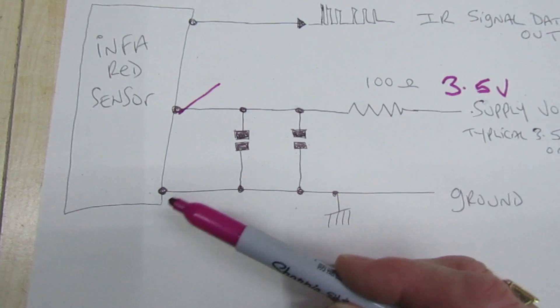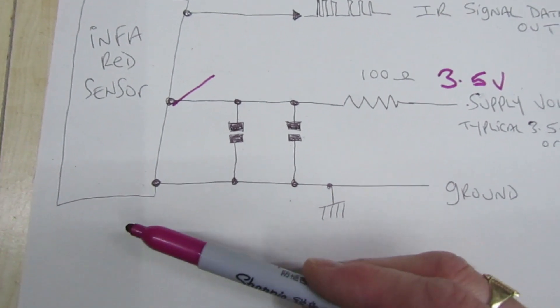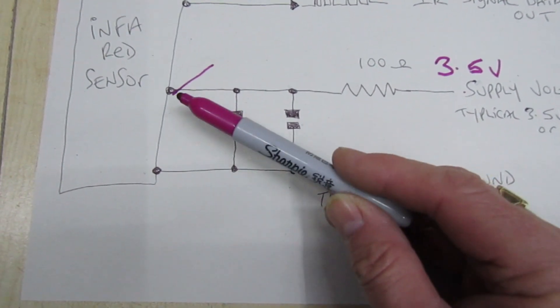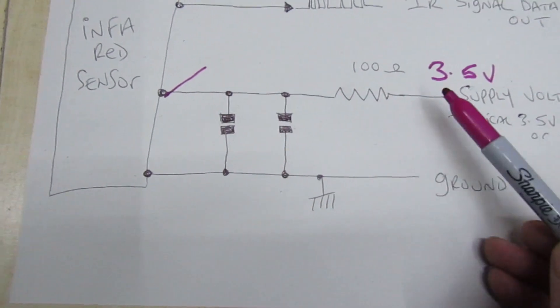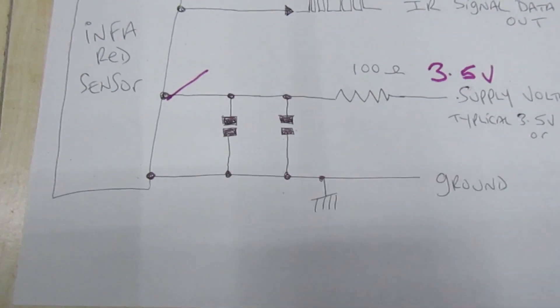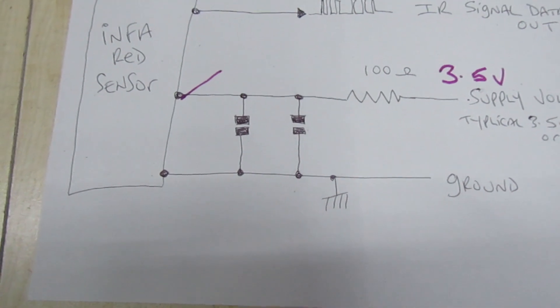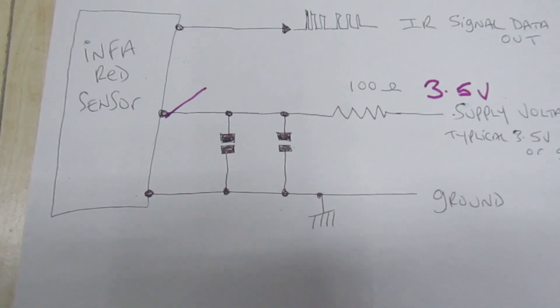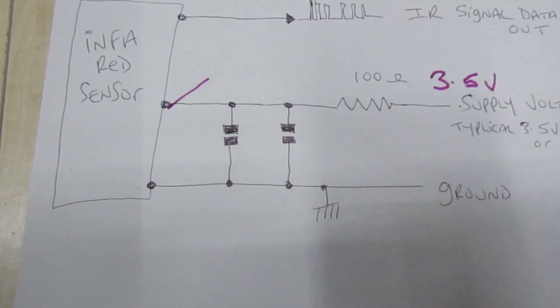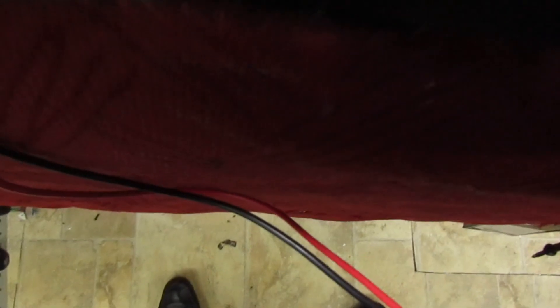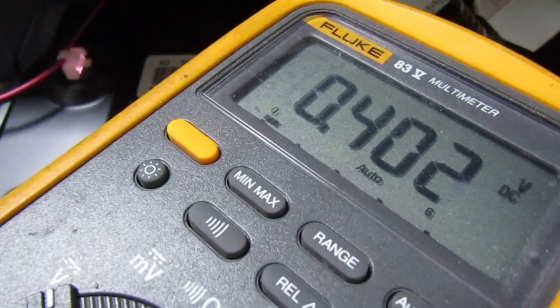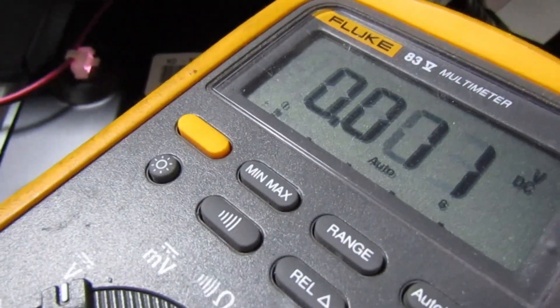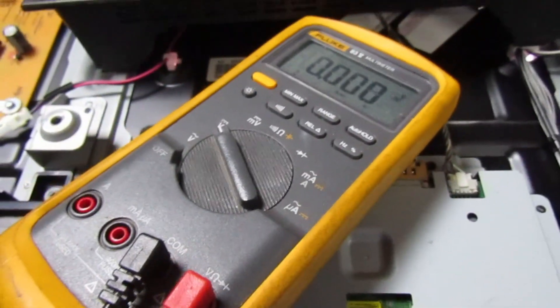I had one of these before where someone cleaned the screen, liquid ran down and damaged one of these tracks - there was power going in but not actually power to the sensor. I can't see any liquid damage on this but let's just take another measurement. That is the other end of the resistor and we only have 0.4 volts on that, so that's interesting.